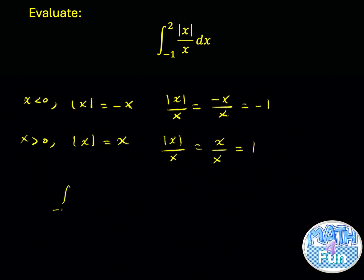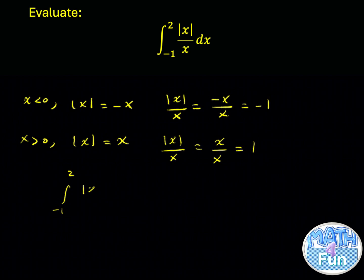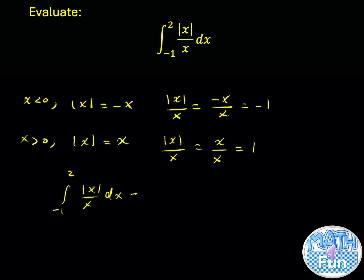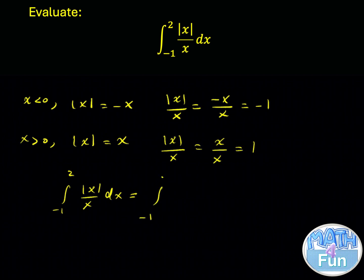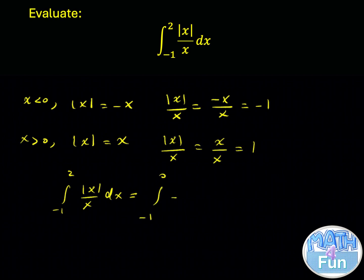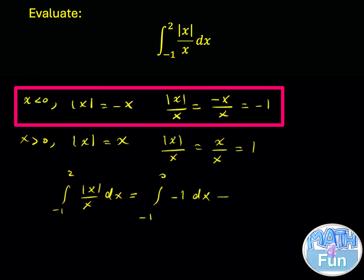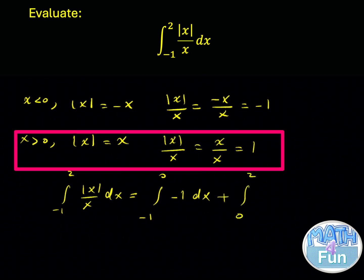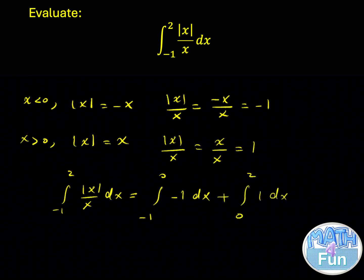So the integral from minus 1 to 2 of absolute x over x dx can be split into two parts: the integral from minus 1 to 0 of minus 1 dx, plus the integral from 0 to 2 of 1 dx.